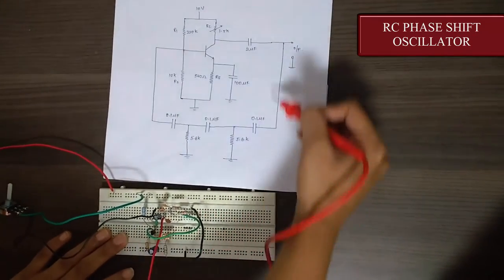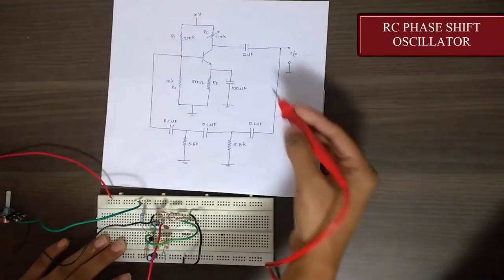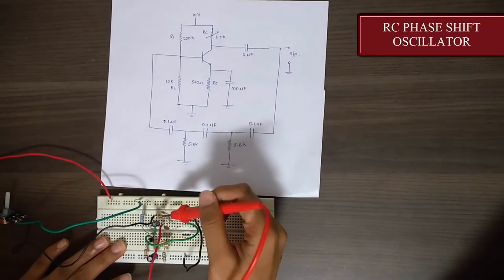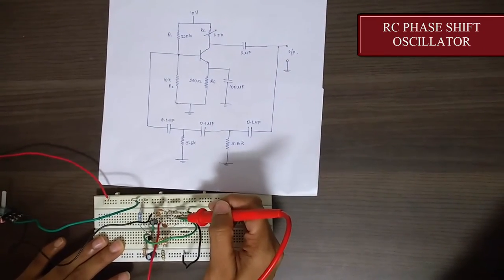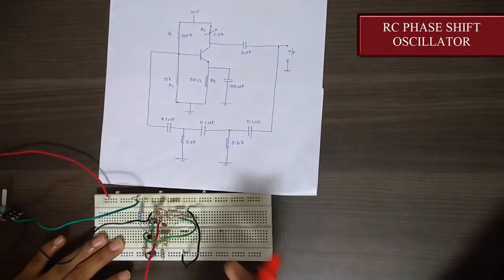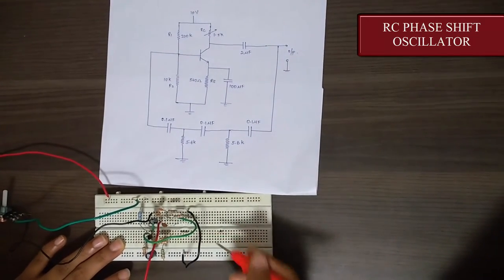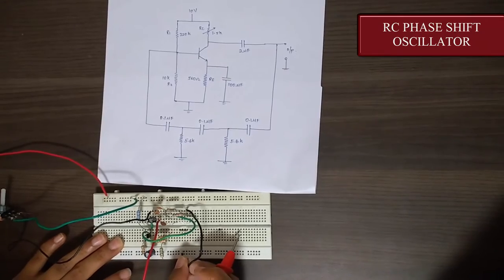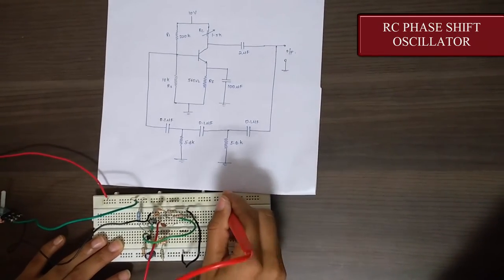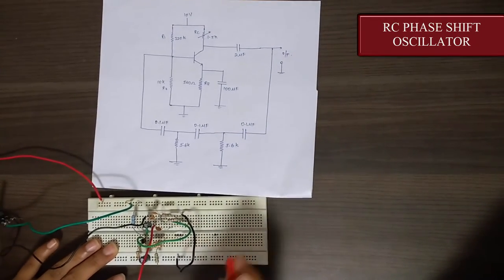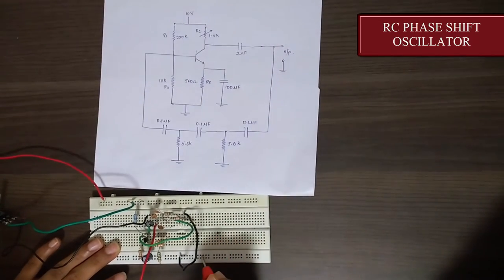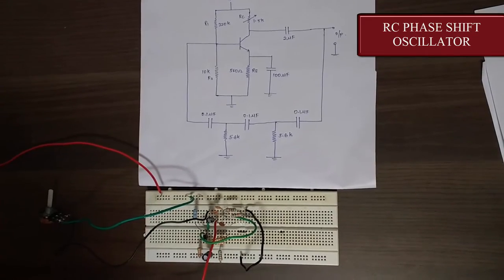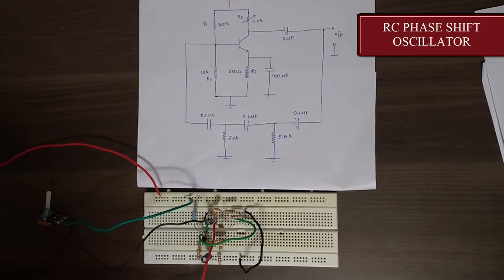And this is the feedback resistor. Here these capacitors are of 0.1 microfarad and these two resistors are of 5.6 kOhms. This black wire here is used as a ground. We are giving input here and output. We are giving voltage 10 volt here and the ground is given here. That's all for the breadboard implementation of RC phase shift oscillator.